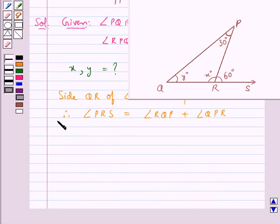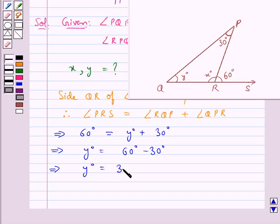Now, substituting the values for the angles, we get 60 degrees, that is angle PRS, is equal to angle RQP, which is y degrees, plus angle QPR, which is 30 degrees. So this means we get y degrees is equal to 60 degrees minus 30 degrees, so y degrees is equal to 30 degrees, or we can say that y is equal to 30.